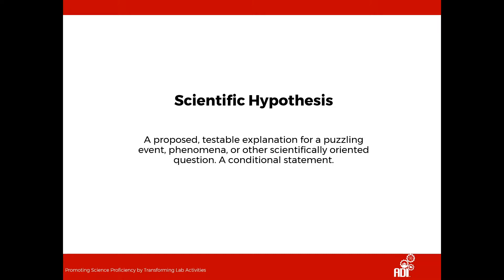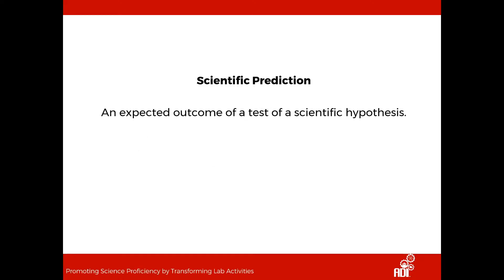Support from evidence can be identified if the expected outcome of a test based on a hypothesis is similar enough to the actual outcome of that test. If results of a test are far from expected values, then that hypothesis will need to be abandoned because it's not supported by evidence. The expected outcome of a test of a hypothesis is called a scientific prediction. Predictions are based on a test, so students should be developing predicted outcomes after developing their test.